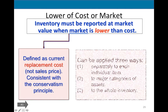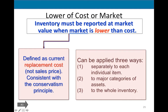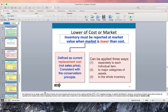The company must report its inventory at market value when the market is lower than cost. This is consistent with the conservatism principle. In accounting, if we have two scenarios — one more optimistic and another more pessimistic — we always choose the pessimistic one, so that if the company faces financial difficulties, we are prepared for that.